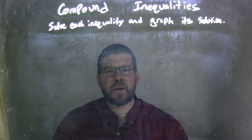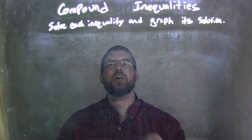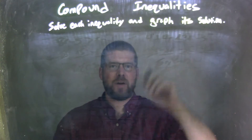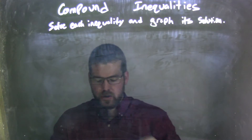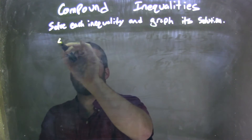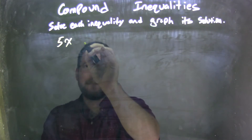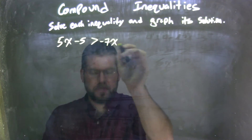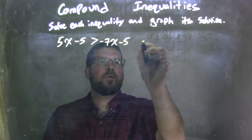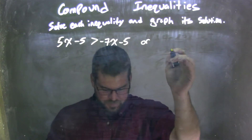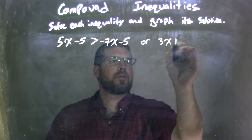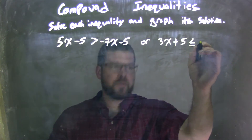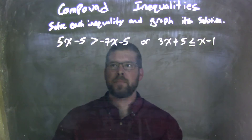Hi, I'm Sean Gannon, and this is MinuteMap. Today we're going to learn about compound inequalities. We're going to solve each inequality and graph its solution. So if I was given this inequality: 5x minus 5 is greater than negative 7x minus 5, or 3x plus 5 is less than or equal to x minus 1.